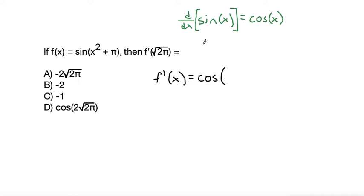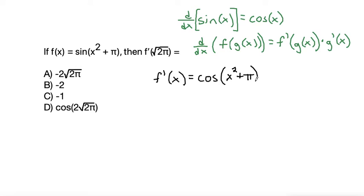So the chain rule says if we're taking the derivative of f of g of x, what we do is we take the derivative of the outside function, leaving the inside function the same, but then we multiply by the derivative of the inside function. Okay, so the f prime is the part that we just did. The cosine would be the derivative of the outside function. Next we leave the inside function the same, so we'll leave the x squared plus pi the same, but now we need to multiply by the derivative of the inside function.